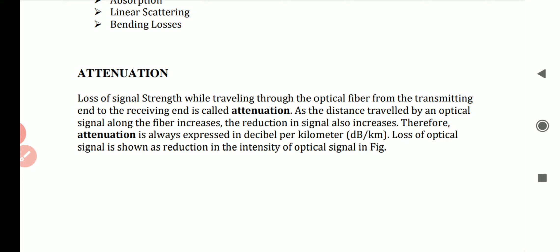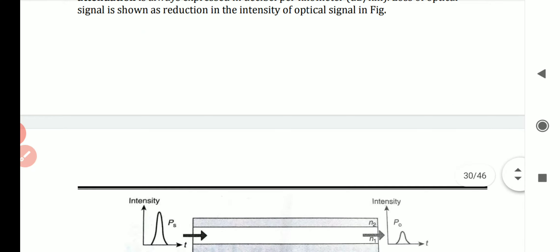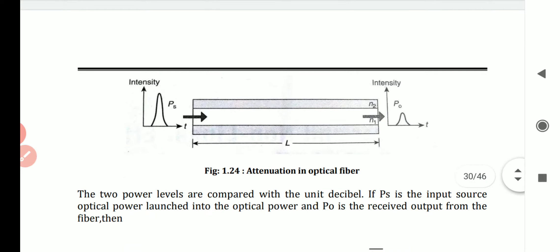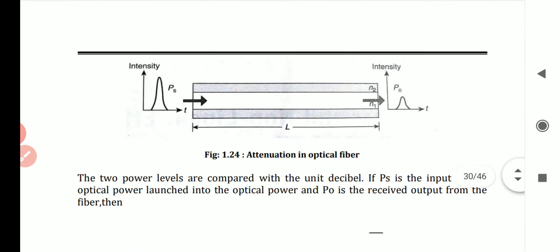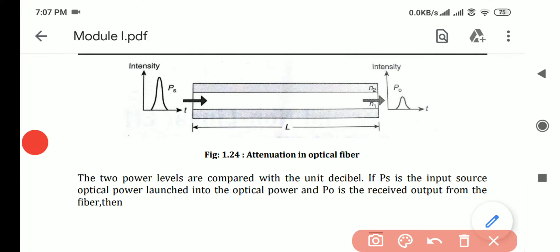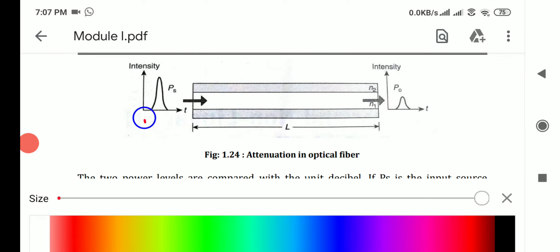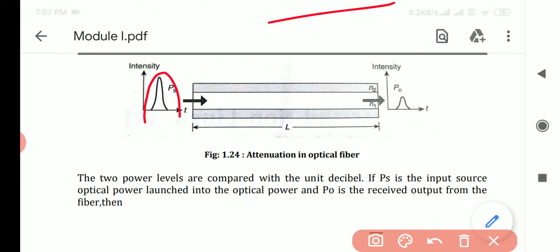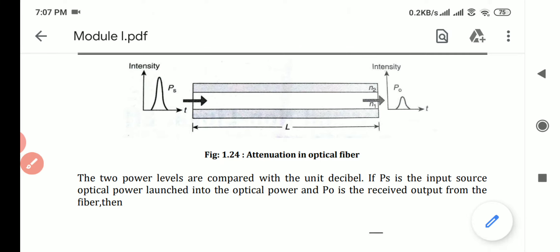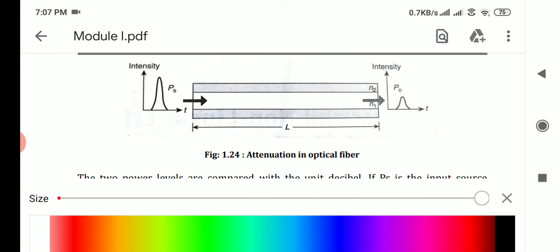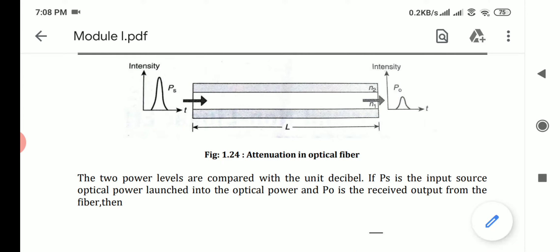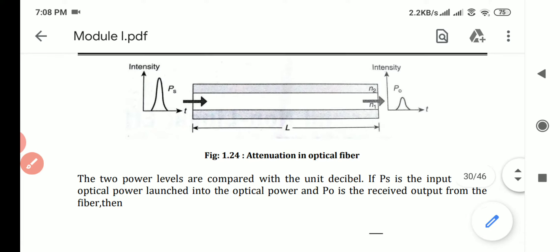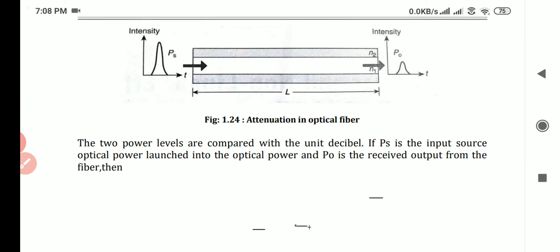This figure shows the attenuation concept. You can see the shape of the pulse at the source, and then at the receiving end the pulse is reduced — that is the attenuation in an optical fiber.